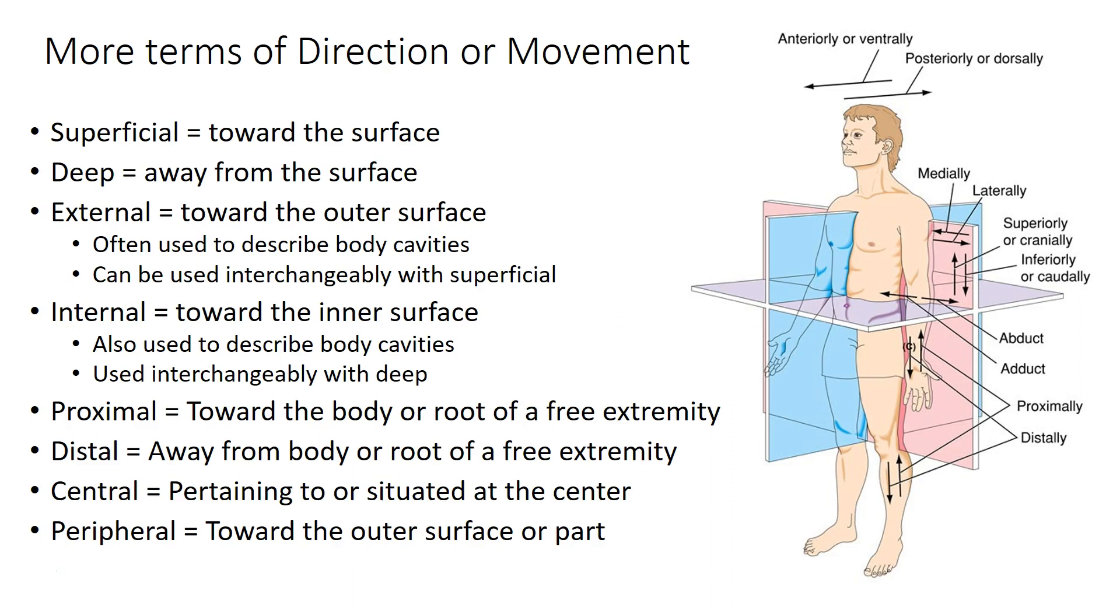Another set of terms outside of those basic dimensions from anterior, posterior, superior, inferior and medial lateral get into more the three-dimensional structure of the body you might say. So we have superficial for things that are more toward the surface of the body like your nose for example and deep for things that are farther away from the surface like your brain or your spinal column.